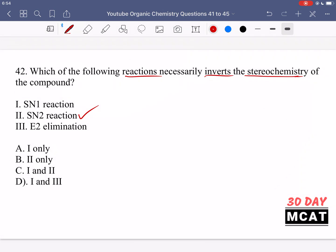SN2 reactions specifically invert stereochemistry, whereas in SN1s we do not just invert stereochemistry. In SN1, the leaving group leaves and we have a planar carbocation intermediate, which can be attacked from either the top or bottom face, giving us a racemic mixture of both R and S forms. One will retain stereochemistry and one will be inverted, so we can't say that SN1 necessarily inverts stereochemistry.